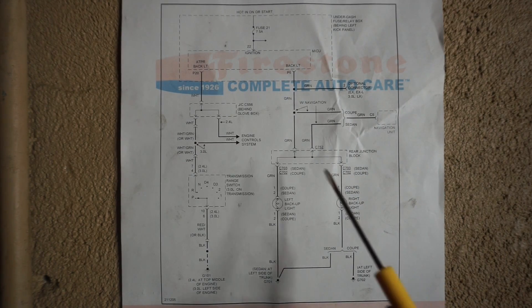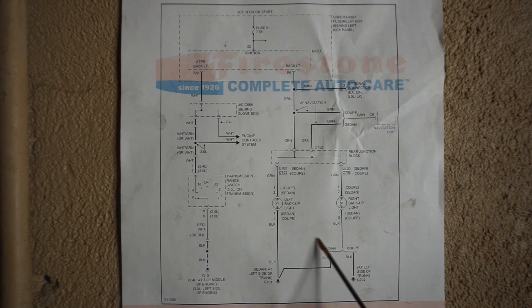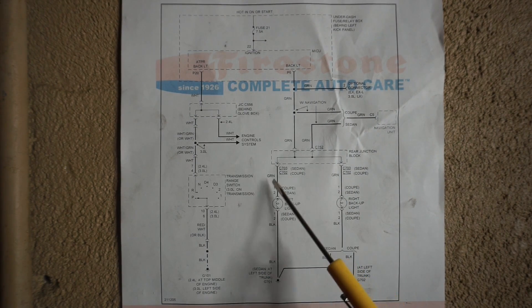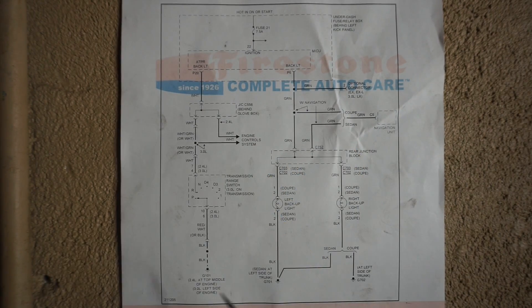Pretty basic — fuse, switch, and load, that's how the system works. We can start at the fuse and check that, then go to the lights, throw it in reverse and check for power. So let's go to the car — key on, parking brake on, throw it in reverse — and we're gonna check the lights. No backup lights.